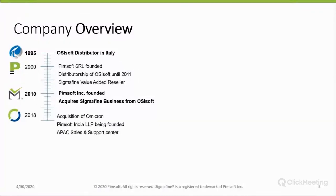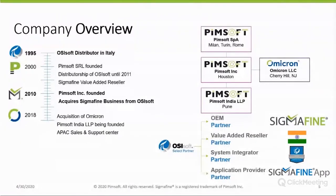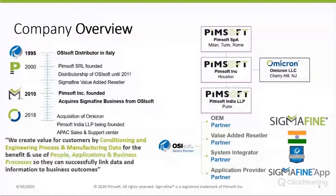In 2018, PIMSOFT also acquired the company Ompro, which has expertise in product customization and software capability expansion. PIMSOFT opened an office in Italy, and in India as a support center for the APAC region. We have offices in Italy, in the U.S., and in India, and we are an Oasisoft Select Partner. We have different levels of partnership: OEM partner, value-added seller partner, system integrator partners, and application provider partners.